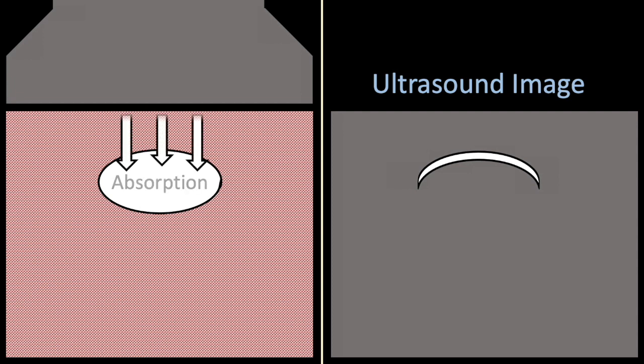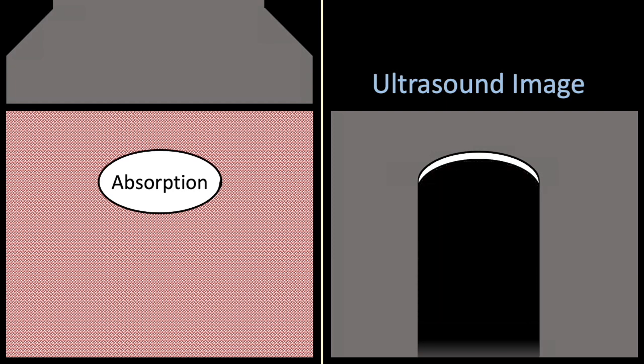Additional ultrasound beams may go deeper within the structure but these get absorbed, they don't get reflected. And this leads to posterior acoustic shadowing because there's a signal void because of the absorption artifact.